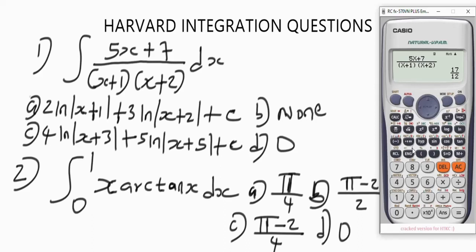If you want to change the value to decimal, press the SD button — so we have 1.41. Now we are going to differentiate the options. The option that gives us 1.41 will be our correct answer to this question. To get the d/dx function on this calculator, press Shift and the button with the definite integral sign — it will bring up d/dx.